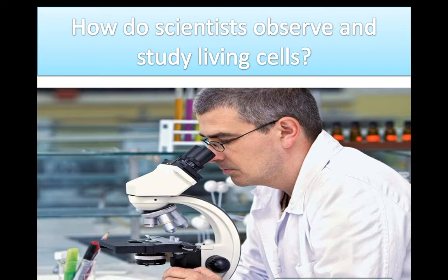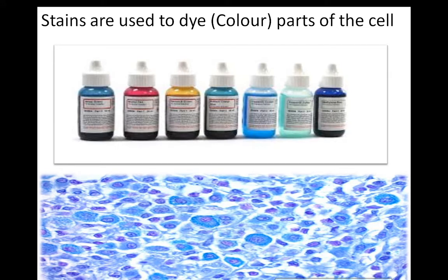The microscope has lenses that can magnify images, allowing us to observe and study cells or any kind of organism, including microorganisms. Scientists also require stains or dyes, which are colourful and give colour to the parts of the cell. Because of these stains, it is easy for scientists to study the different parts of the cell in detail.